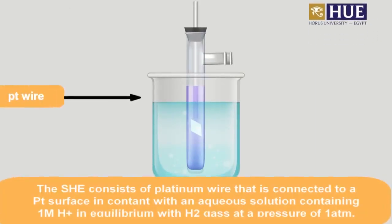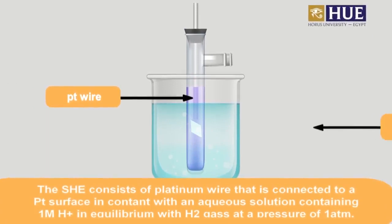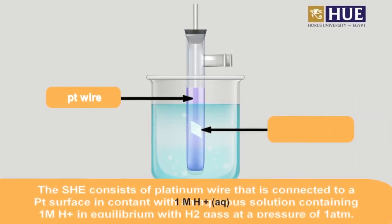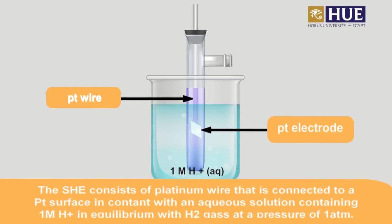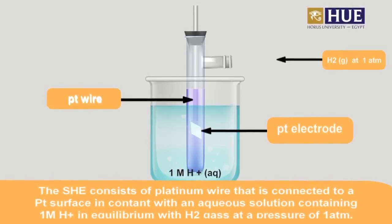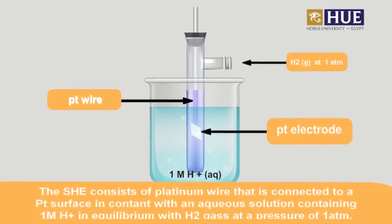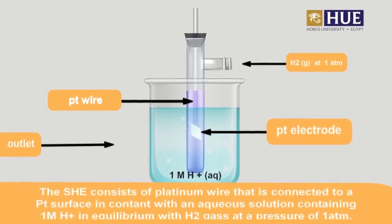The standard hydrogen electrode consists of a platinum wire connected to a platinum surface in contact with an aqueous solution containing one molar hydrogen ion, in equilibrium with hydrogen gas at a pressure of one atmosphere.